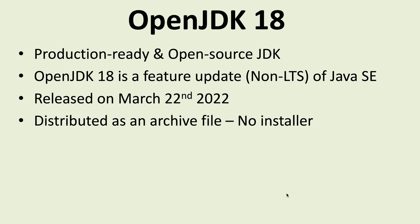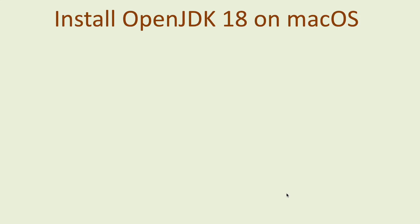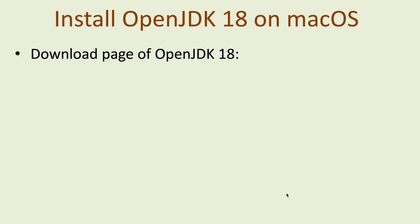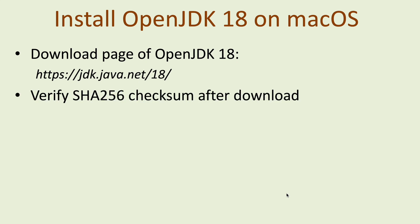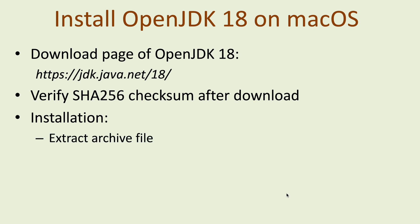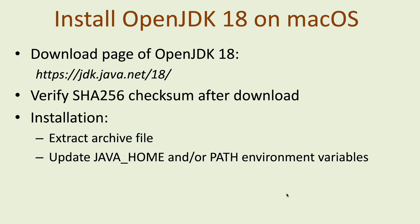OpenJDK 18 is distributed as an archive file with no installer program. To install OpenJDK 18 on macOS, you need to download the archive file from its official download page at this URL. Then you should verify the SHA-256 checksum after download, and for installation you need to extract the archive file and update the JAVA_HOME and PATH environment variables.